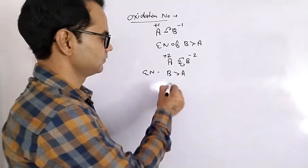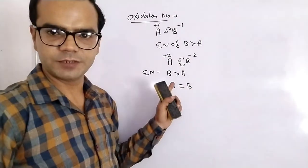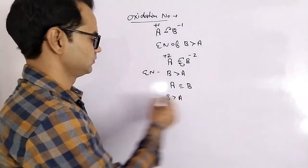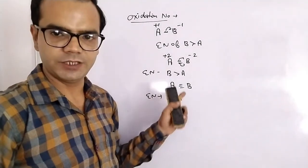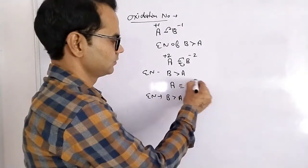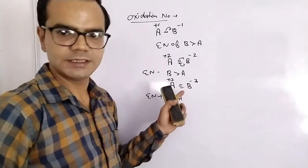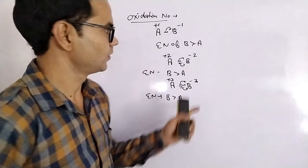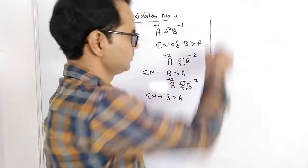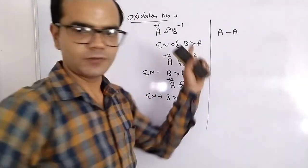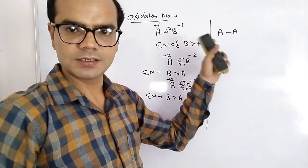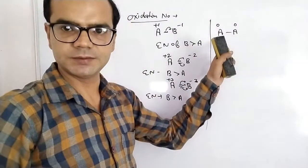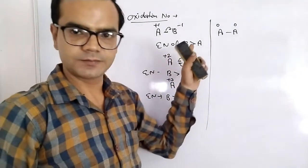And if we have a triple bond between A and B, and again the electronegativity of B is higher than that of A, all three bond pairs will be attracted towards B. But if we have the same type of atoms — A and A — the electronegativity of both is the same, so there will be no charge distribution. Charge on each A is zero. By this, we can find out the oxidation number of various compounds.